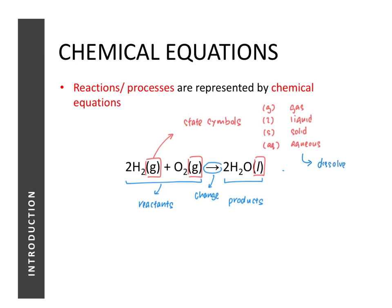The last thing to look out for in a chemical equation are the numbers in front of the substances. These numbers tell us the ratio in which the reactants react and the ratio in which the products are formed. For example, in this reaction, one oxygen reacts with two hydrogen to form two water molecules.